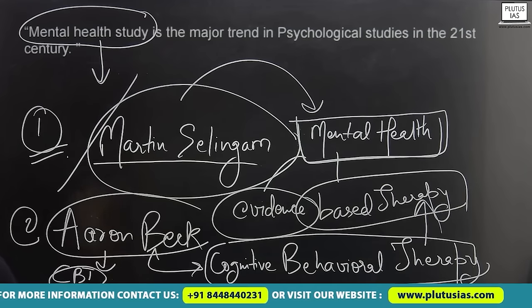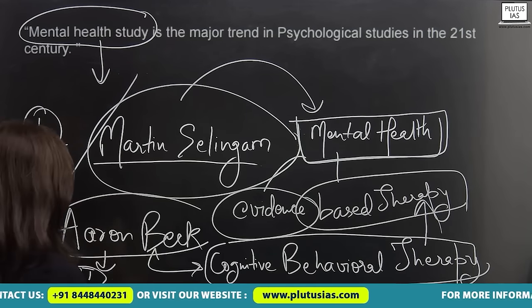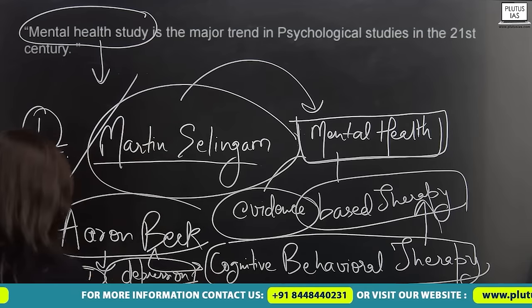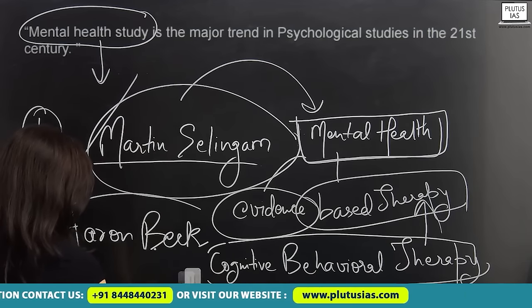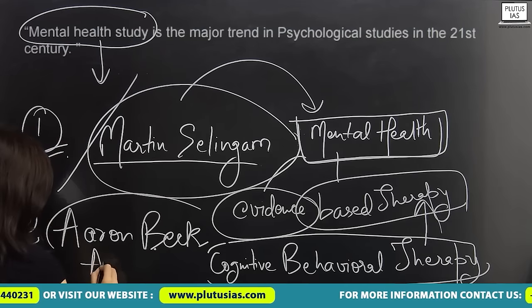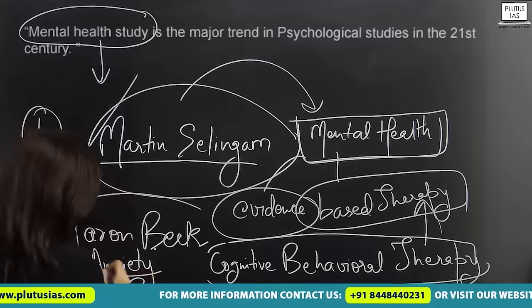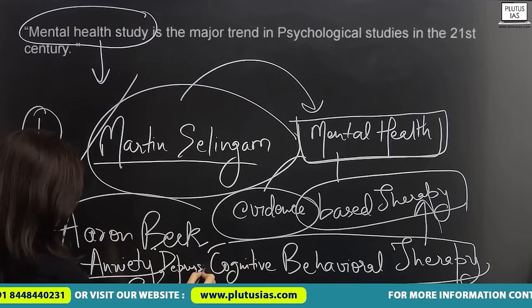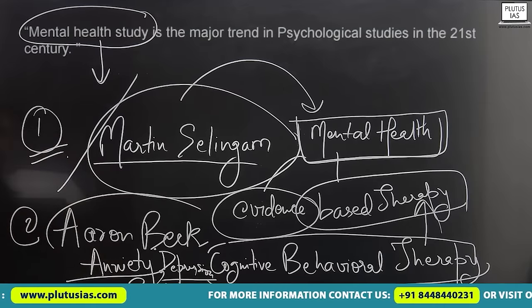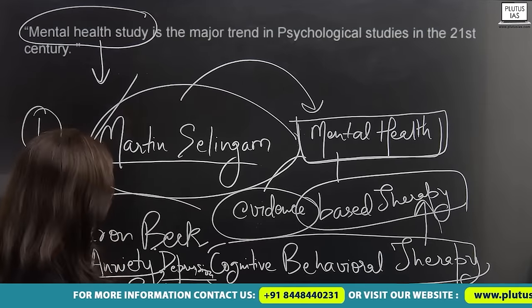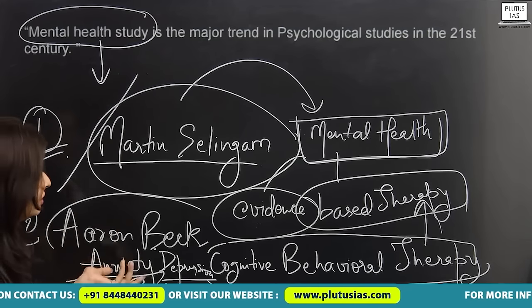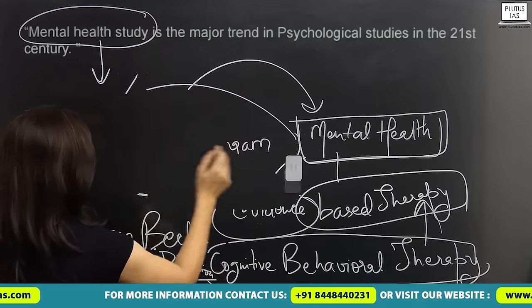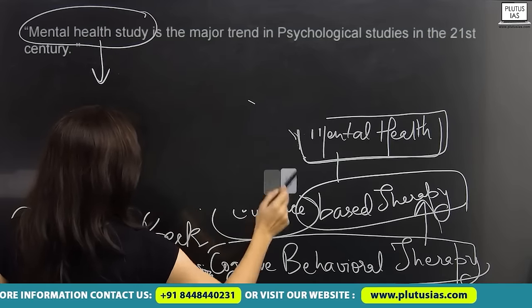You can also talk about the cause of depression, anxiety, etc., and how these could be cured through evidence-based therapy. These are two psychologists so far. Since the question is 10 marks, we can write about three more psychologists.